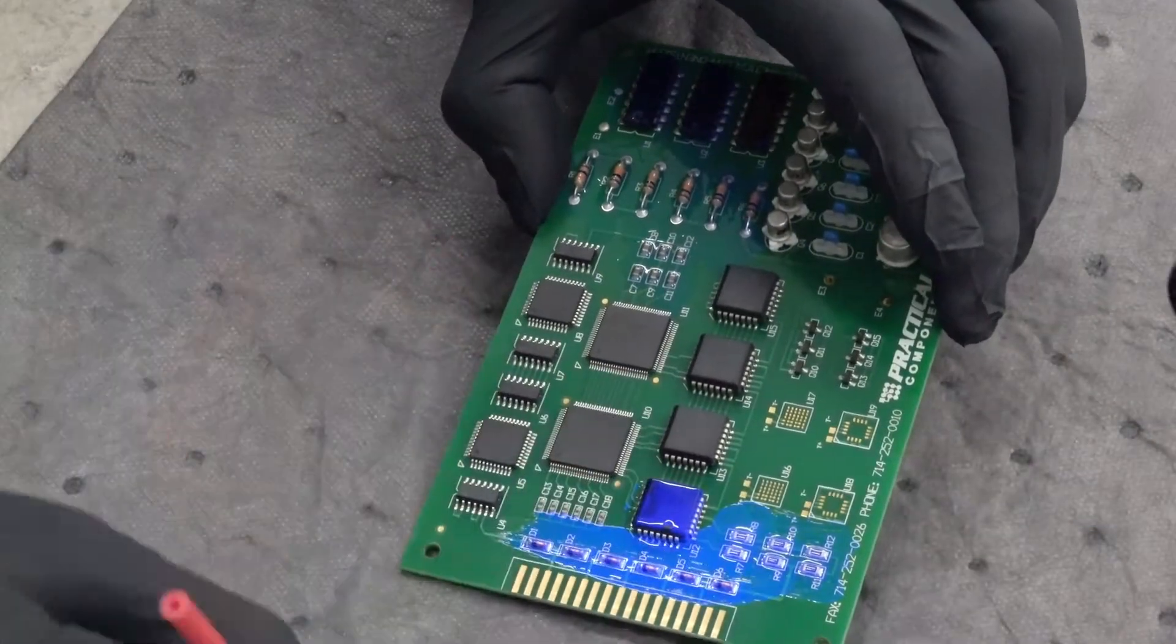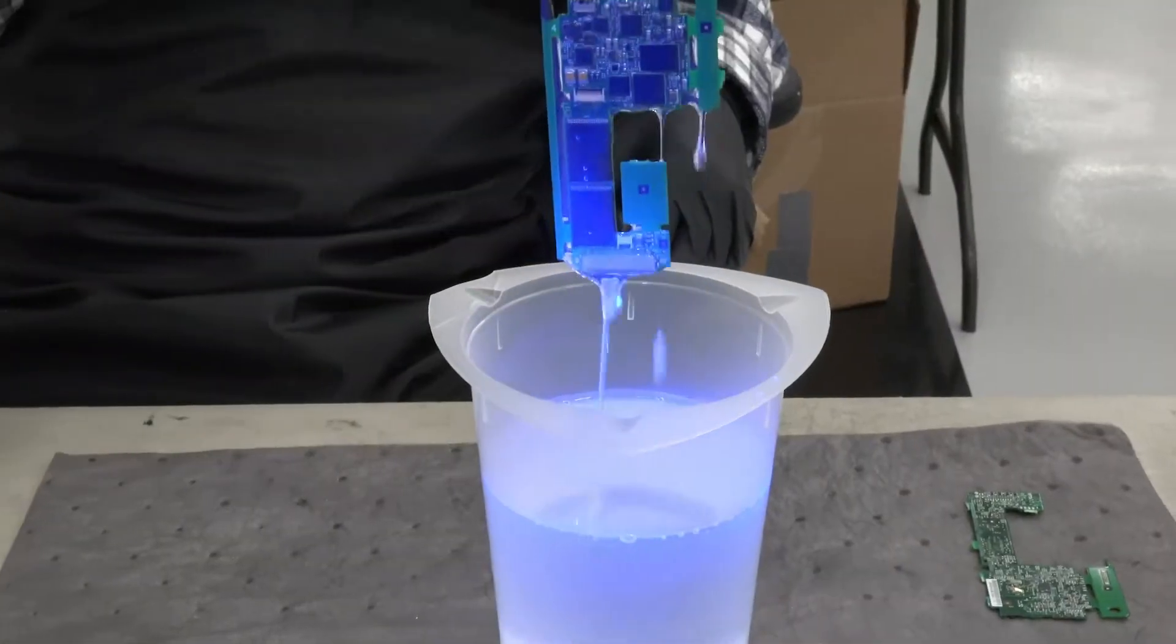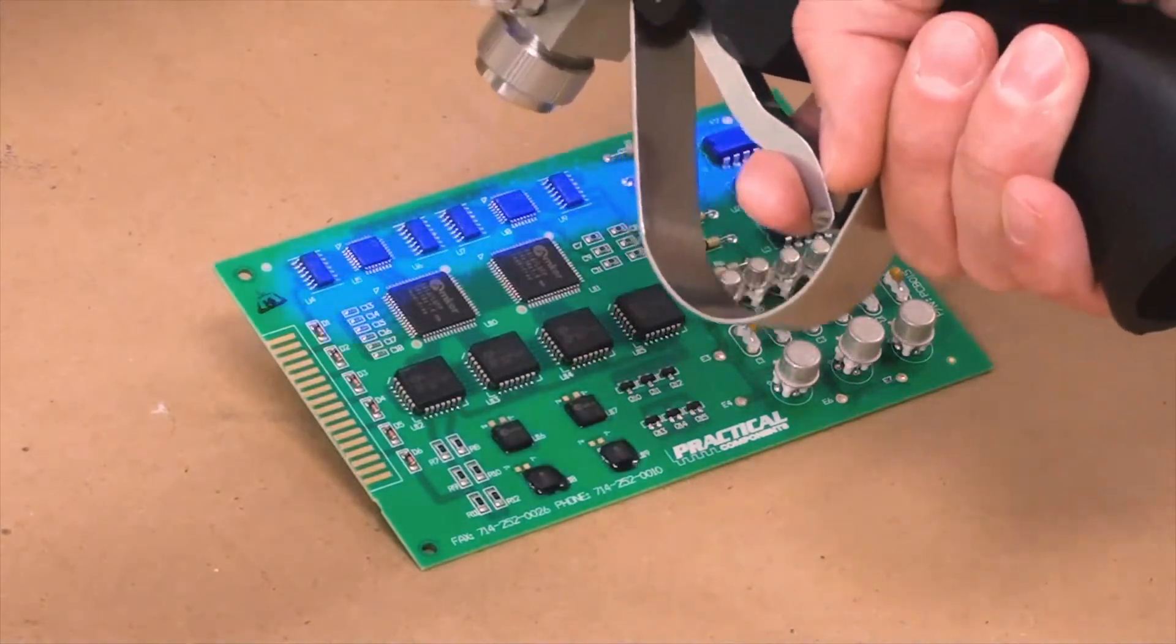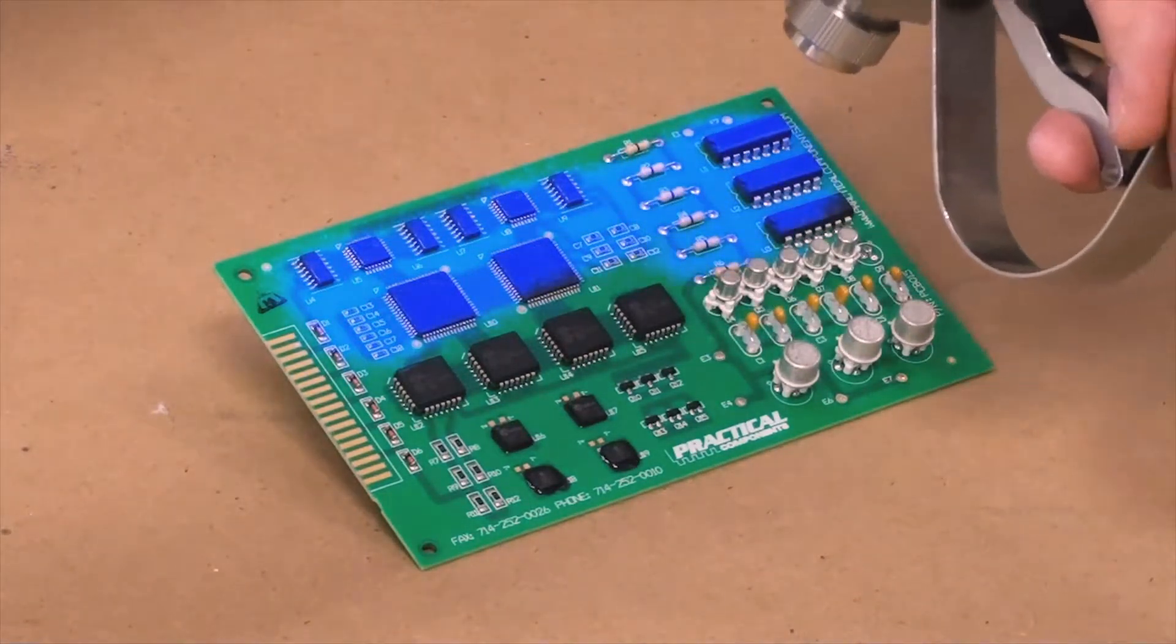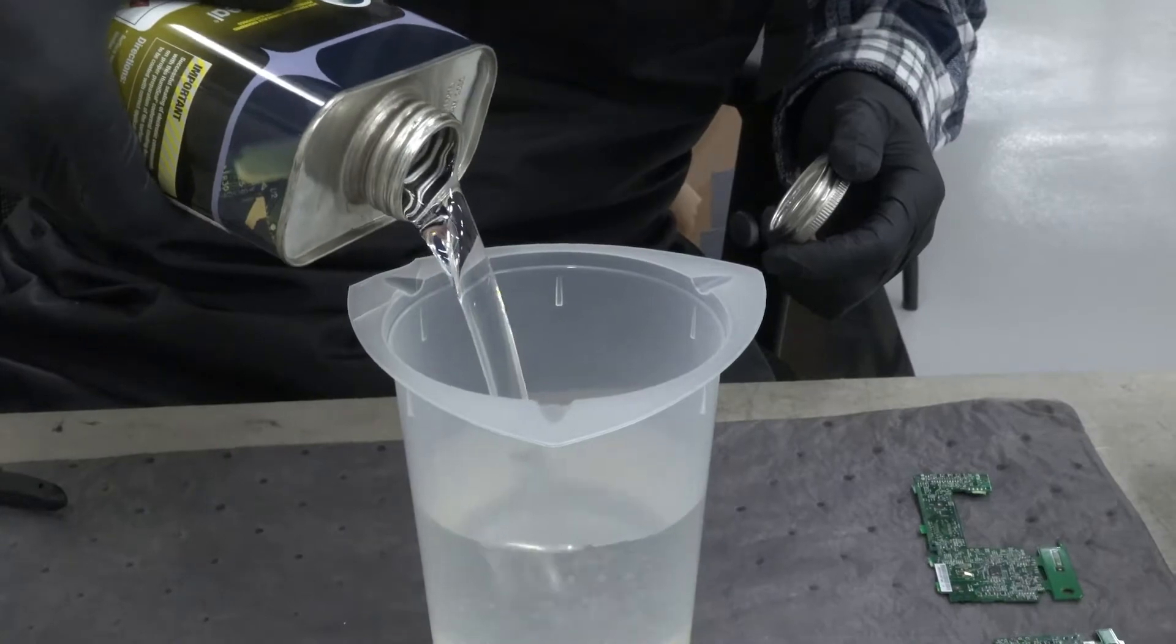Manual coating processes such as brushing, dipping, and hand spraying all have throughput limitations. They also tend to result in excessive material waste and added product handling.